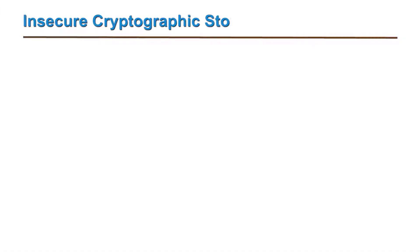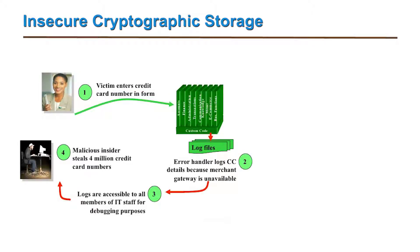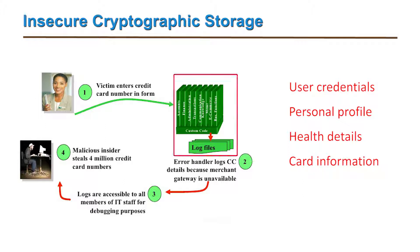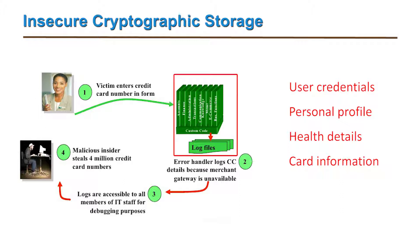Next is insecure cryptographic storage. In common cases, vulnerability exists due to the insecure storage of sensitive data like user credentials, personal profiles, health details, and code processing information. These are stored in application databases. When this data storage happens without encryption or hashing, it becomes vulnerable to attack. Such sensitive data must be encrypted or hashed.